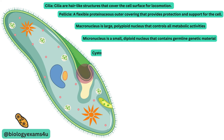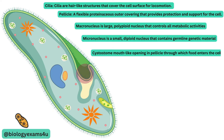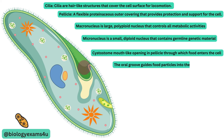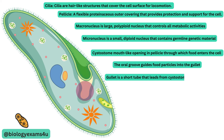Cytostome is a mouth-like opening in the pellicle through which food enters the cell. The oral groove serves to guide food particles, primarily bacteria, into the gullet. The gullet is a short tube that leads from the cytostome to the food vacuole.